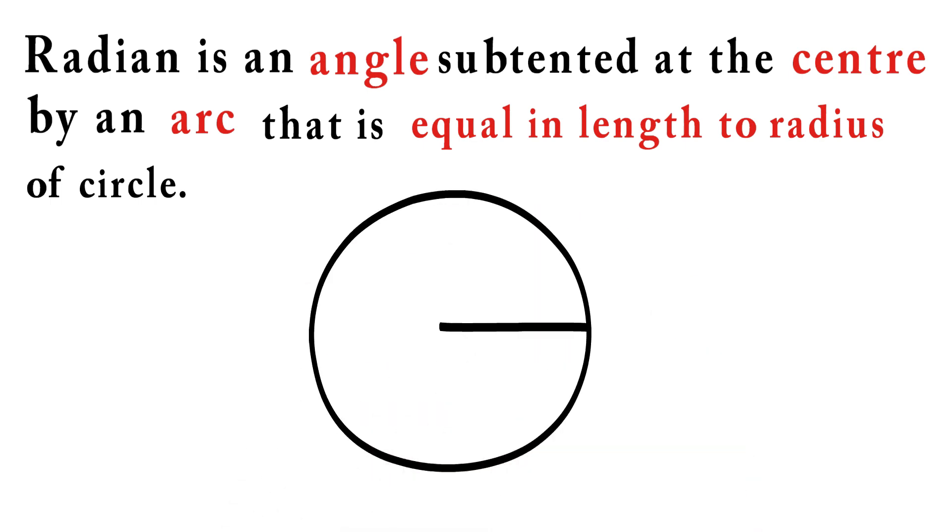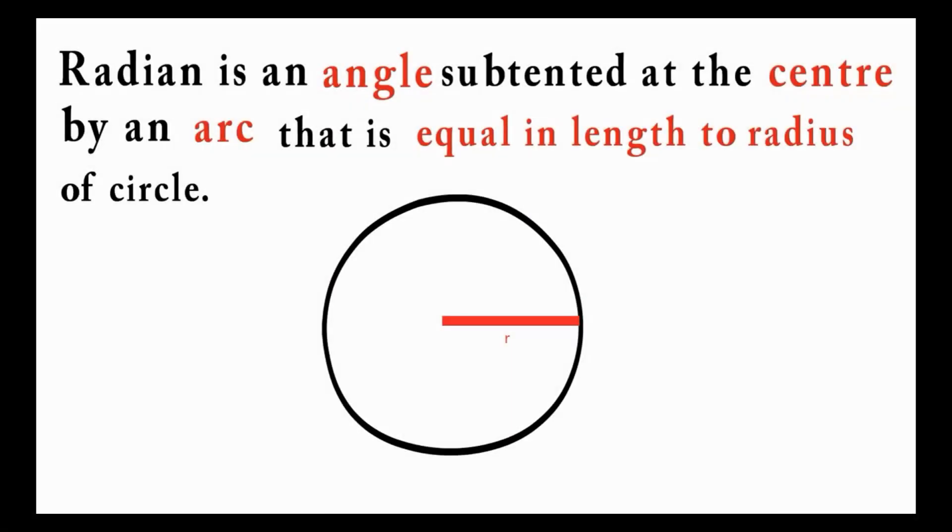This is a circle with a radius r. Now I take the copy of this radius and place at this point and now I bend this line on the circumference of the circle. And now let me join these two points to form an angle theta.